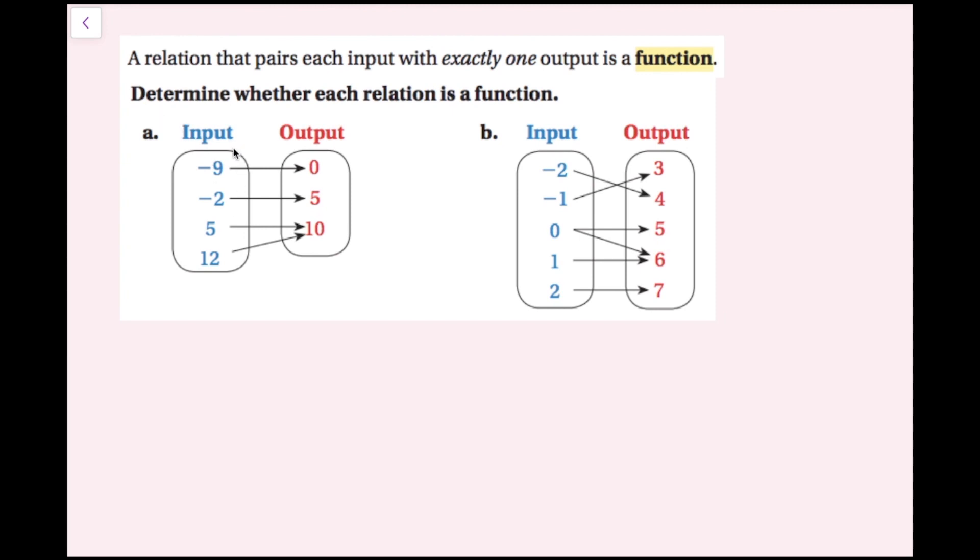So if I look over at this mapping diagram, I have my input of negative 9 that goes to 0, I have my input of negative 2 that goes to 5, I have my input of 5 that goes to 10, and my input of 12 that also goes to 10. So if we look back at our definition, each input has to have exactly one output. Well this 5 is going to 10, this 12 is going to 10, so even though these are going to the same output, they're different inputs, so this is still going to be a function. Because all of these inputs only go to one number in the output here.